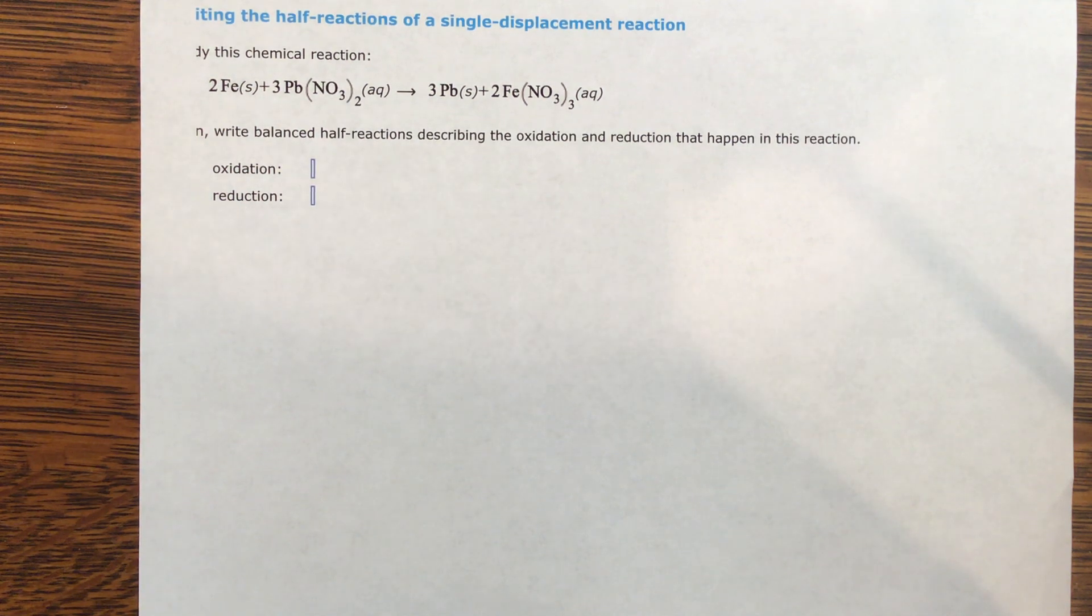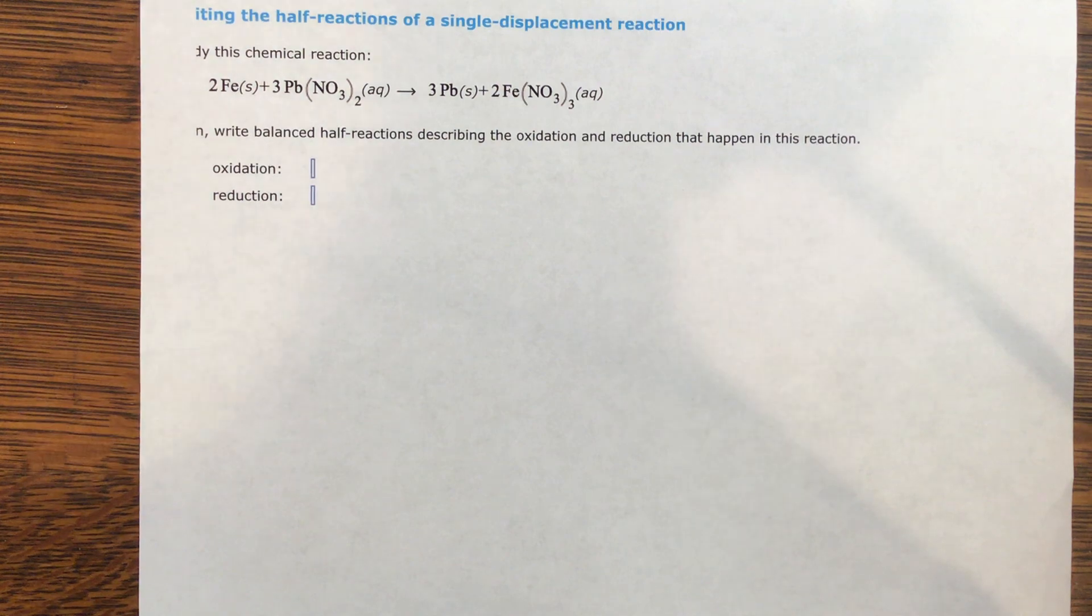So you will either have oxidation where you lose an electron, or you'll have a reduction where you gain an electron, and the same electron that you lost in oxidation is the very same electron that's gained when you have reduction. So I need to break these two apart into which one is losing and which one is gaining an electron. And to do that, I need to start with oxidation numbers.